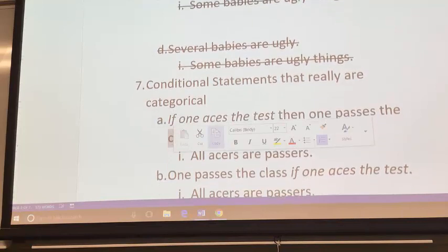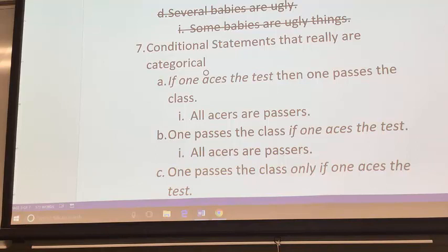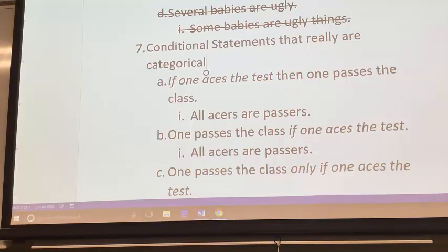Another category is when you have conditionals but they're really stating categorical relationships. Earlier in the semester we talked about a statement like 'if you ace the test, then you pass the class.' This can mean anyone who aces the test passes the class — traditionally you'd say 'one' instead of 'you,' making it clear it's categorical. So 'if one aces the test, then one passes the class' applies to any individual: all people who ace the test are people who pass the class, or to abbreviate: all acers are passers.